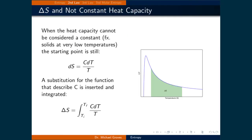Keep in mind that when the heat capacity cannot be considered constant — for example, in solids at very low temperatures — the starting point is still dS = C·dT/T for infinitesimal changes. A substitution for the function describing the heat capacity is inserted and integrated between the initial and final temperatures. The figure on the right illustrates this calculation.